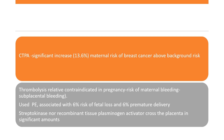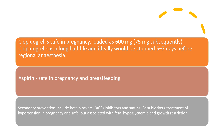Thrombolysis is a relative contraindication in pregnancy because of increased risk of maternal bleeding, especially bleeding from the subplacental area. If used to treat PE, it's associated with 6% risk of fetal loss and 6% risk of premature delivery. Neither streptokinase nor recombinant tissue plasminogen activator crosses the placenta in significant amounts. Clopidogrel is safe in pregnancy. The loading dose is 600 mg and then 75 mg thereafter. Clopidogrel has a long half-life and ideally needs to be stopped 5 to 7 days before regional anaesthesia, such as epidural or spinal.